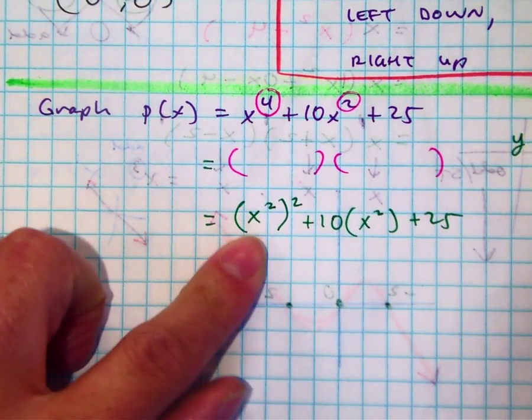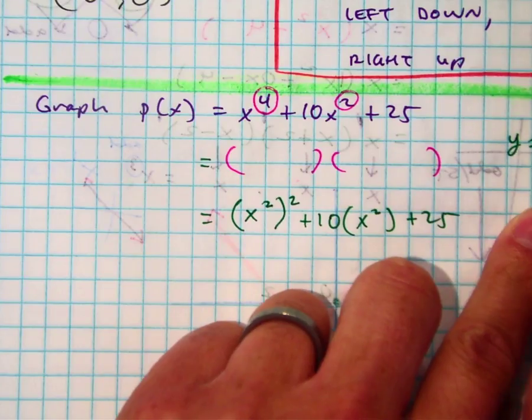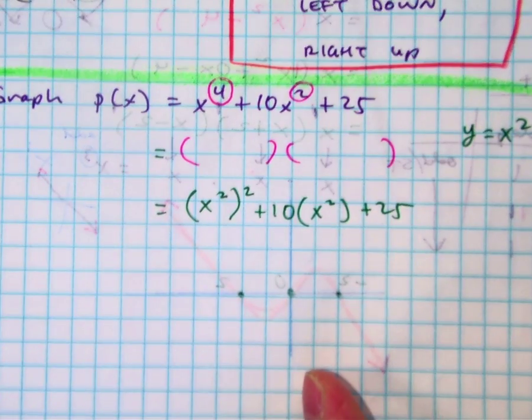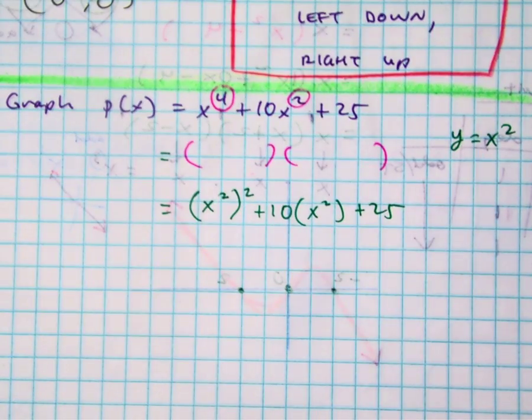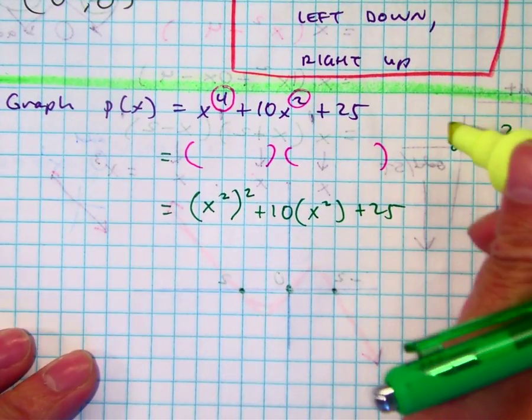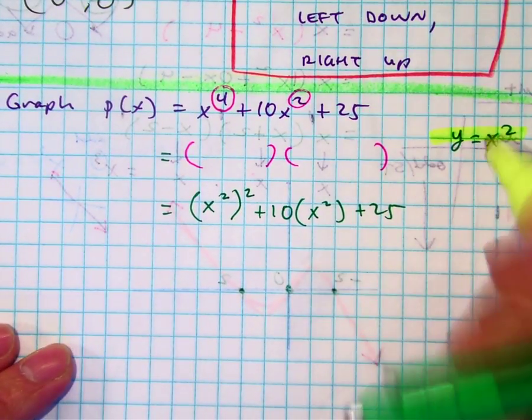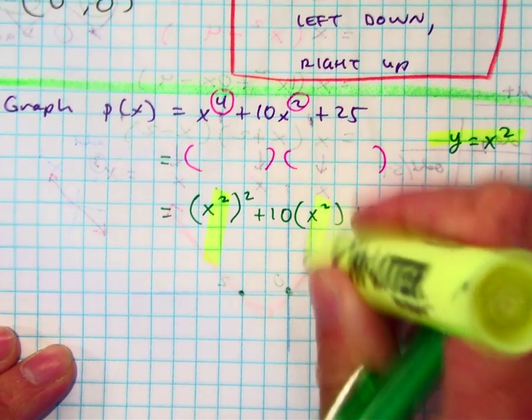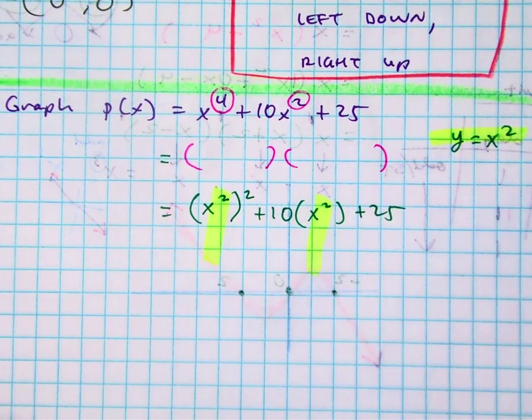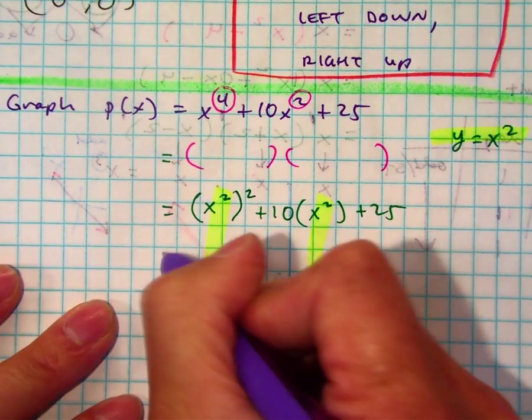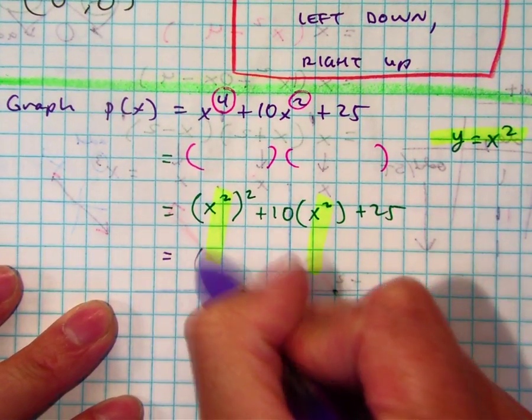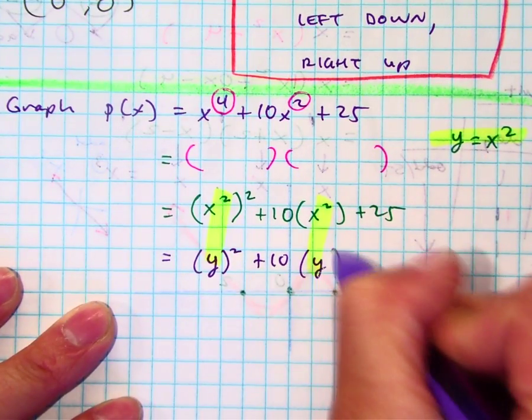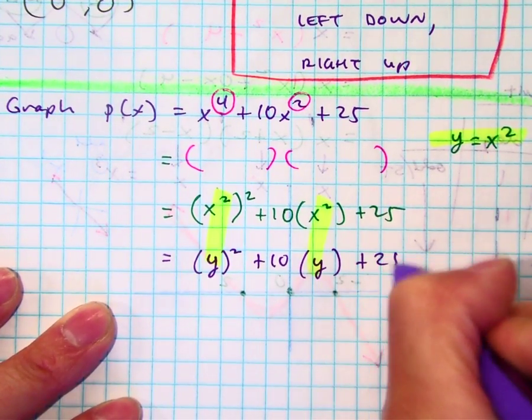Well, what do you do? I can make y equal to x squared. So basically what I'm going to do is a substitution. Every time I see x squared, I'm going to write y. Let's rewrite this together, class. What do I get? y squared plus 10y plus 25.